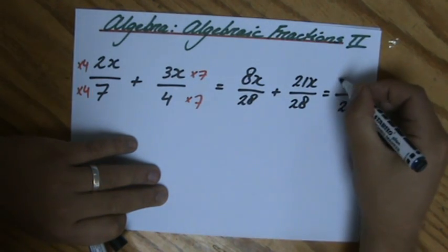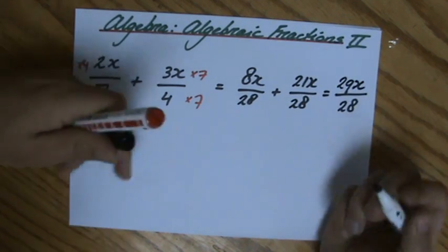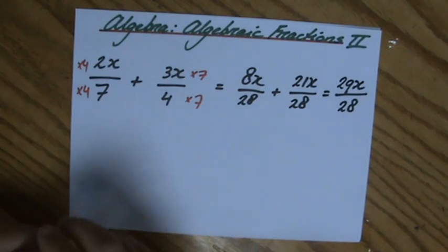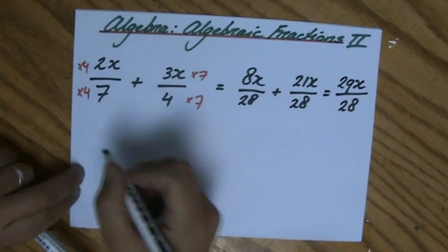Now the denominators are the same, so I can form the addition. 28 stays the same as denominator and I have 29x of it. All right, so that is a basic question.